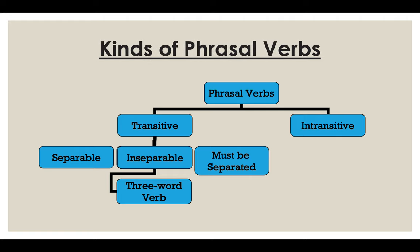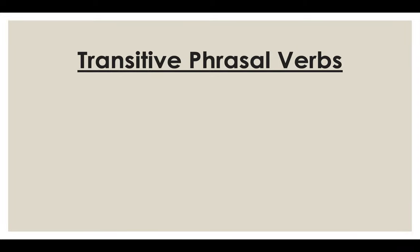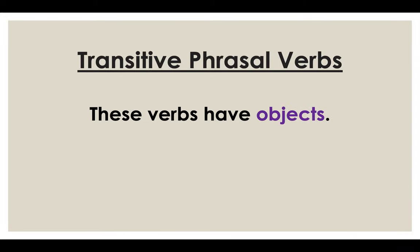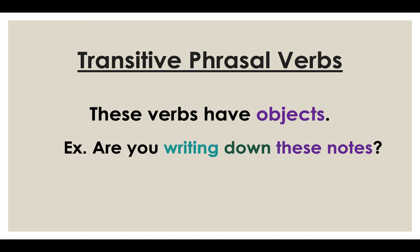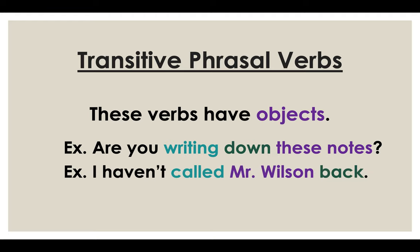So, kinds of phrasal verbs. We have transitive phrasal verbs or intransitive phrasal verbs. Transitive — they can be separable, inseparable, or those ones that must be separated. The inseparable ones have the three-word verb — I will explain that in a minute. Transitive phrasal verbs have objects. Example: are you writing down these notes? These notes are the objects. I haven't called Mr. Wilson back — so call back is the phrasal verb and Mr. Wilson is the object.